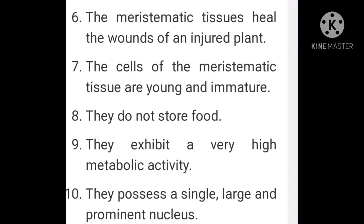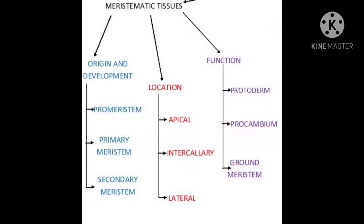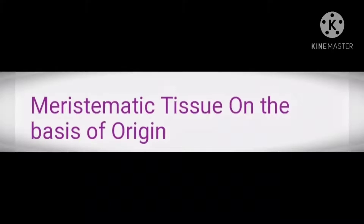Classification of Meristematic Tissue. Meristematic Tissue ko different bases ke adhaar par divide kiya gaya hai, jaise ki origin and development, location, function, position — toh there are four different types.